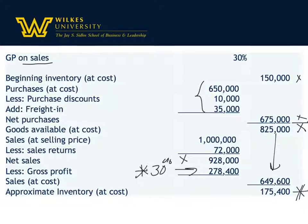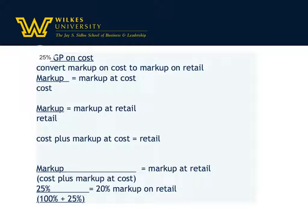Remember, this formula deals with the markup on sales. What if you're given the markup based on cost? If you're given the percent markup on cost, you have to convert it to the markup on sales — or the markup on retail. In this example, we've got a 25% gross profit based on cost, so we're going to convert it to the markup on retail.